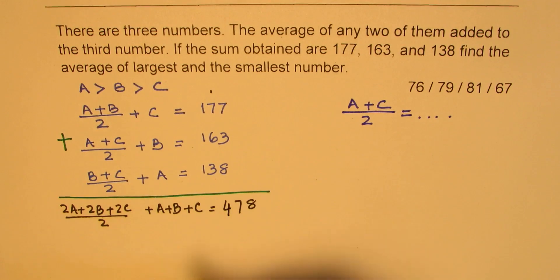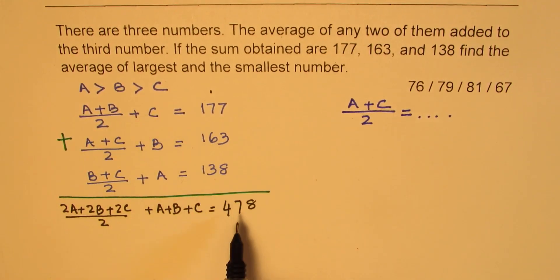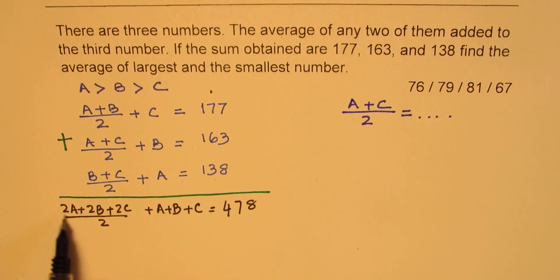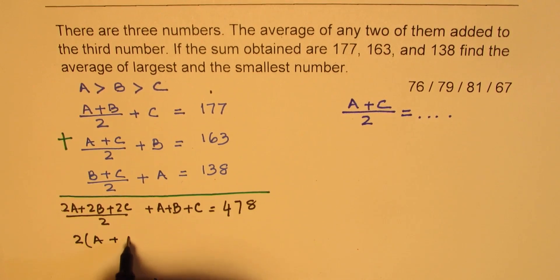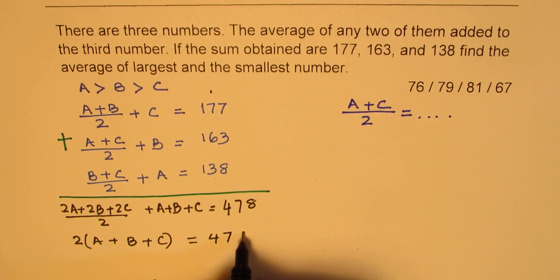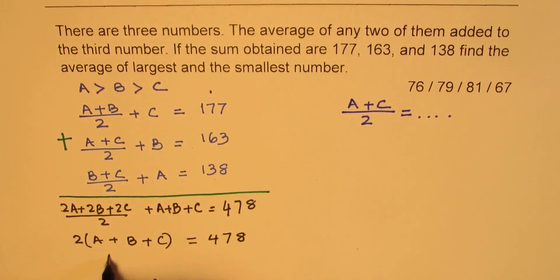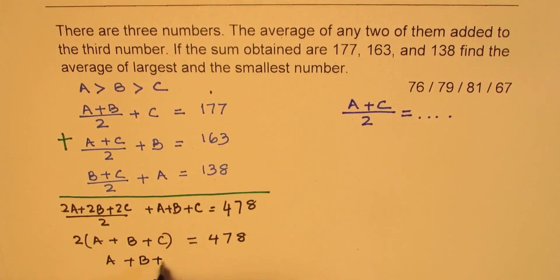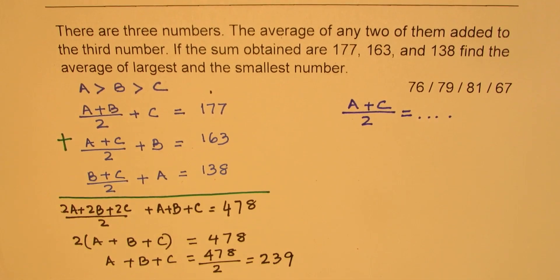So that becomes the total of these. Well of course you can take two common, so what we get on this side is 2 times (A+B+C), and that is 478. So we can do half of this to get what is A+B+C, which is half of 478, and when you divide you get 239. So we get 239 as sum of A+B+C.